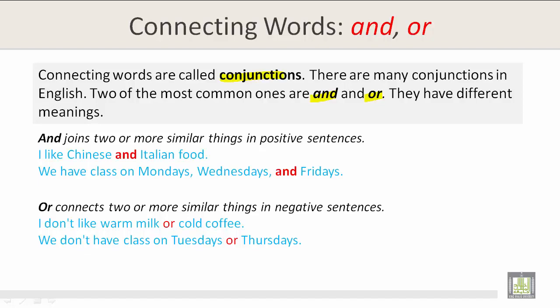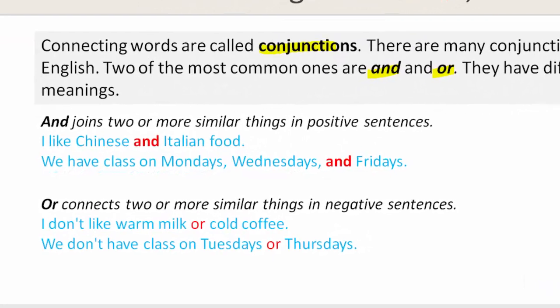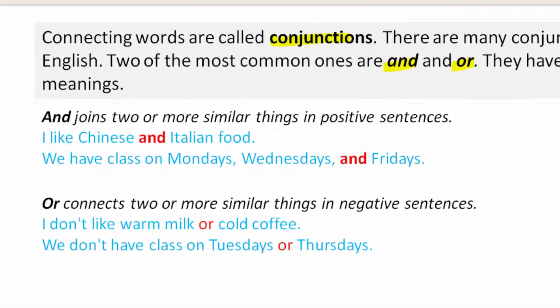And joins two or more similar things in positive sentences. For example: I like Chinese and Italian food. We have class on Mondays, Wednesdays, and Fridays.